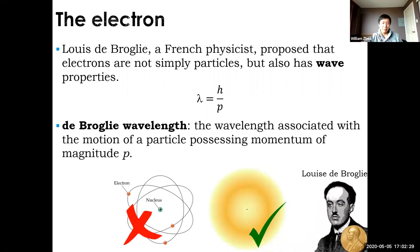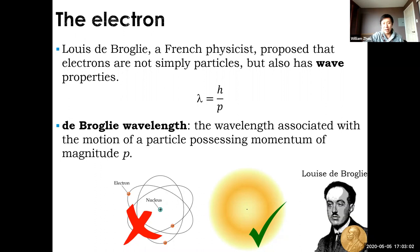Louis de Broglie was a French physicist who proposed that not only did light have wave-particle duality, but also electrons — and not just electrons, all matter in the universe can exhibit wave-particle duality, meaning everything on the macroscopic and microscopic scale has a wavelength. The equation lambda equals h over p: lambda is the wavelength, h is Planck's constant, and p is the momentum of any particle. They are inversely proportional, so high wavelength means low momentum and vice versa.